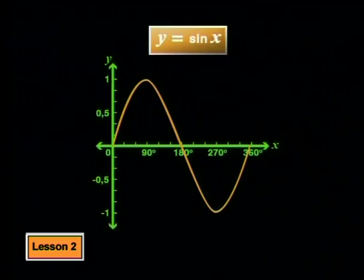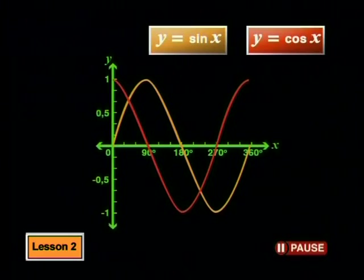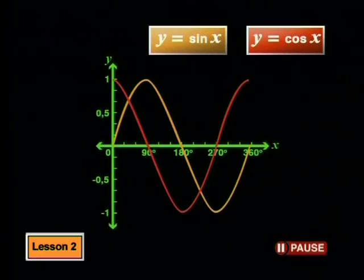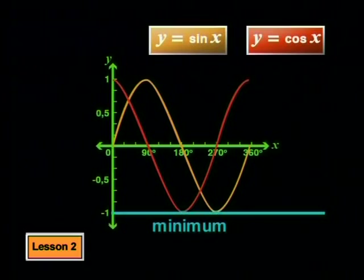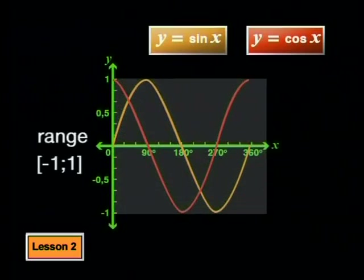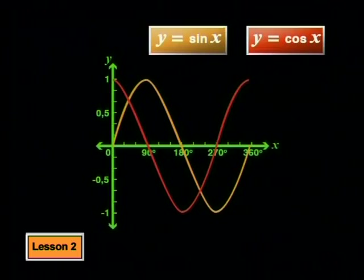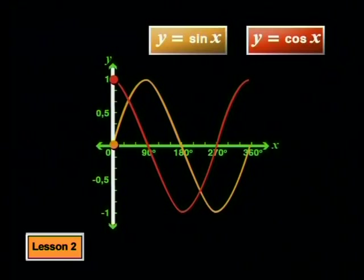Now let's look at the graphs of our two functions together. Here is the graph of y equals sine x, and here is the graph of y equals cosine x. If you look at these graphs, you should be able to see some ways in which they are the same and some ways in which they are different. If you look carefully, you'll see that they both reach a maximum of 1 and a minimum of negative 1, so they have the same range from negative 1 to positive 1. Of course, they don't reach maximums and minimums at the same x values. At 0 degrees, the cosine graph has a maximum value, but the sine graph has an x-intercept.